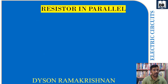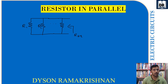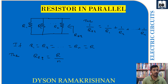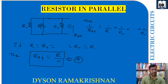Resistors in parallel: if there are n resistors in parallel — R1, R2, ... Rn — then 1/R_eq = 1/R1 + 1/R2 + ... + 1/Rn. If all resistors are equal, that is R1 = R2 = ... = Rn = R, then R_eq = R/n. Remember this — it will be helpful for solving MCQs.